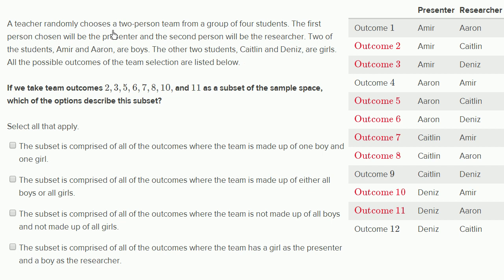A teacher randomly chooses a two-person team from a group of four students. The first person chosen will be the presenter, and the second person will be the researcher. Two of the students, Amir and Aaron, are boys. The other two students, Caitlin and Denise, are girls.